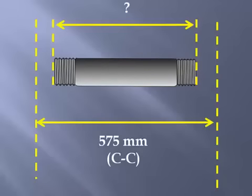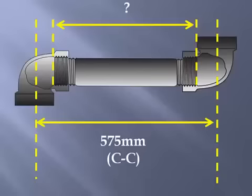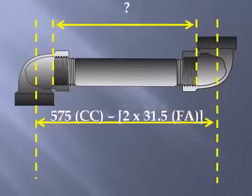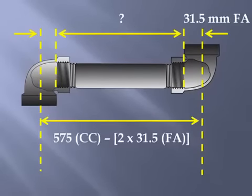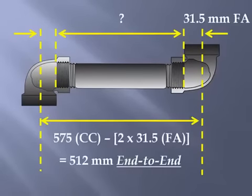Having just calculated for a 31.5 millimeter fitting allowance on 40 mil 90s, that means we'll subtract two fitting allowances from the 575 center-to-center measurement. So 575 millimeters minus 63 millimeters, remember we have a fitting allowance at each fitting, would result in a 512 millimeter end-to-end measurement.